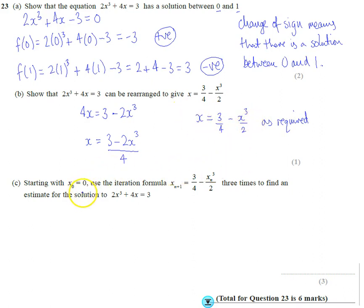And then the last bit, starting with x₀ = 0, use the iteration formula x_{n+1} = 3/4 - x_n³/2. It tells us to start with x₀ equals 0. So to find x₁, I'm going to set this up. It's going to be 3/4 minus the previous answer, which is x₀ cubed, and then we divide that answer by 2.